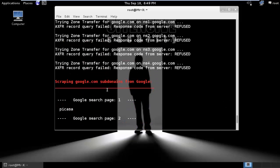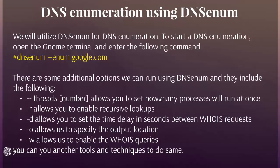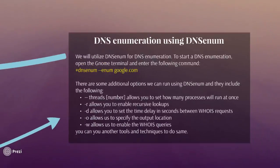There are some additional options we can run using dns-enum. These include: --threads [number], which allows you to set how many processes will run at once — but keep in mind that more threads can generate more traffic, so use carefully. Next, -r allows you to enable recursive lookup. -o allows us to specify the output location so we can save dns-enum output to a specific file. -v allows you to enable whois query. You can also use other tools and techniques to do the same.